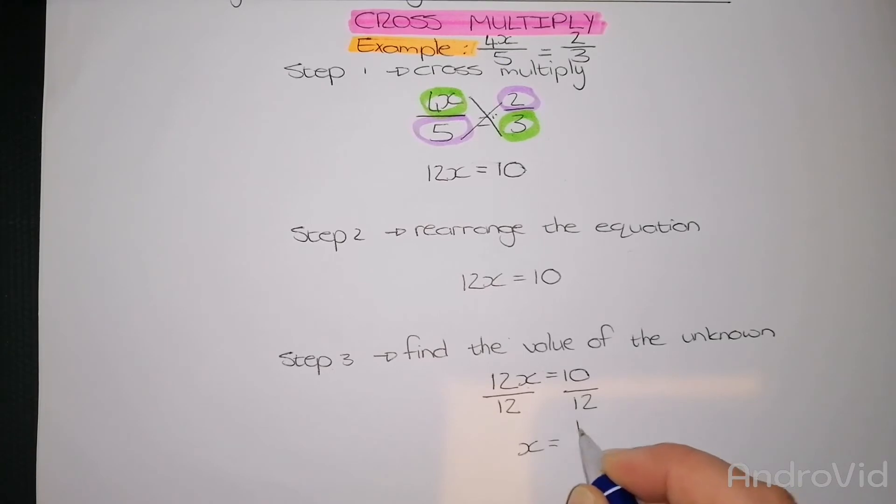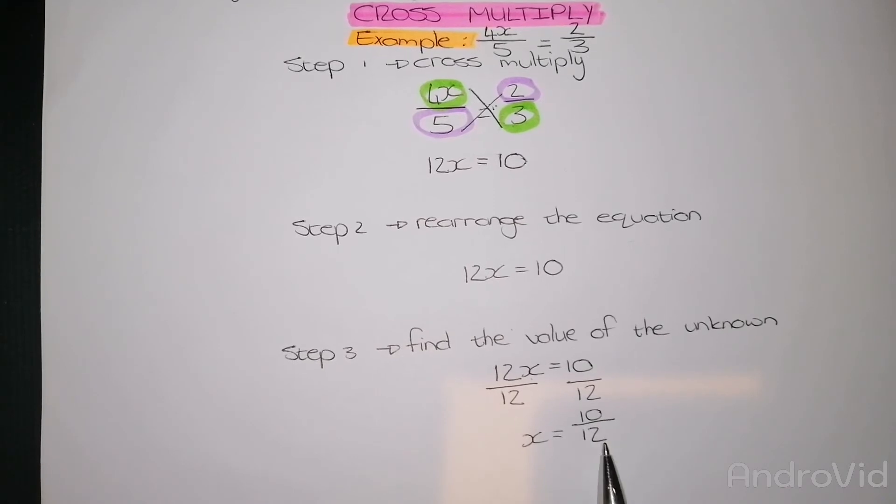Rewrite it: x equals 10 over 12. This is not the simplest form. 2 can be divided into both 10 and 12.